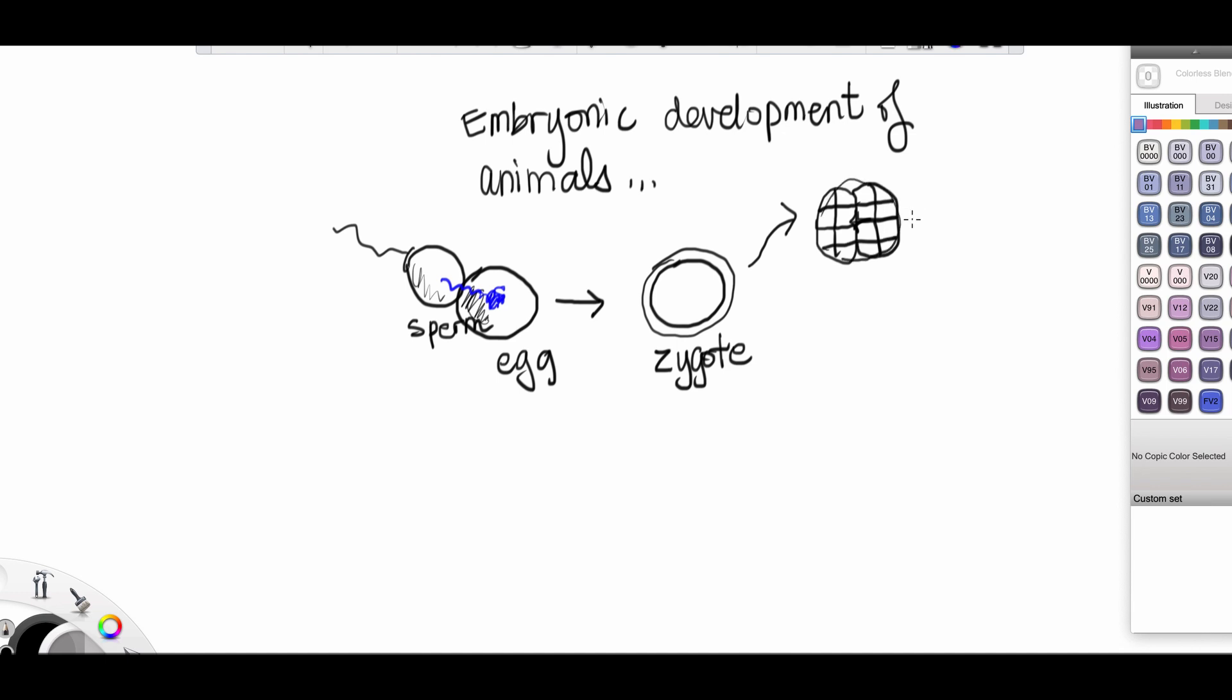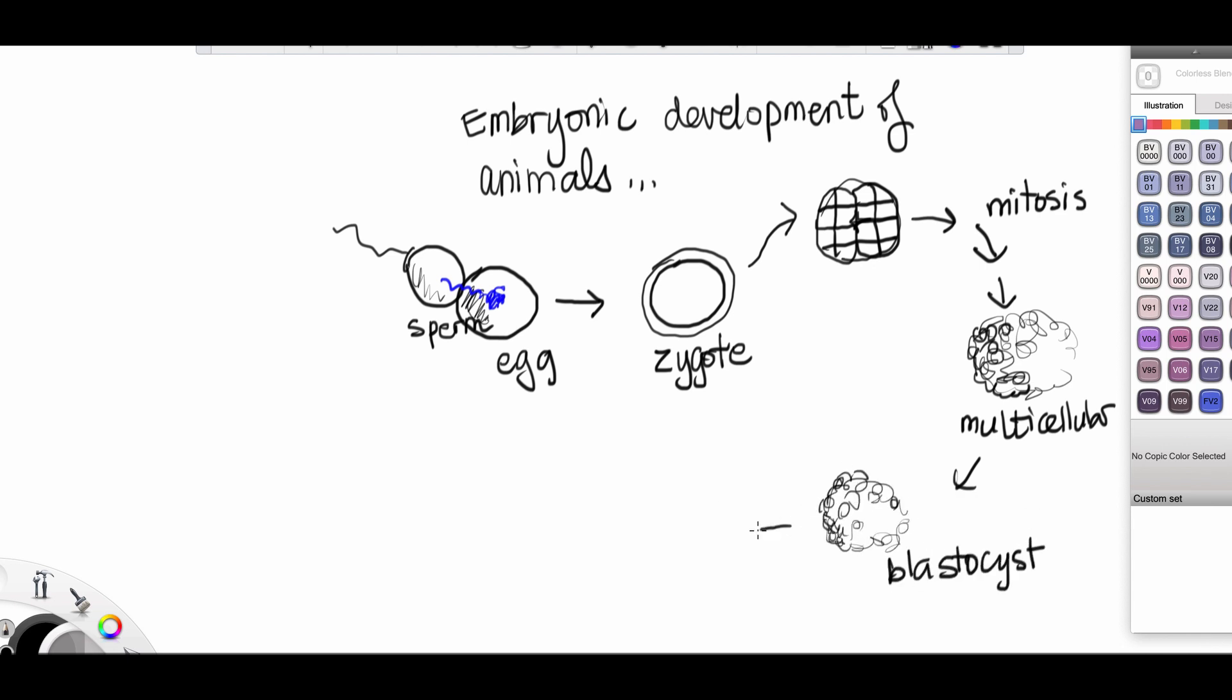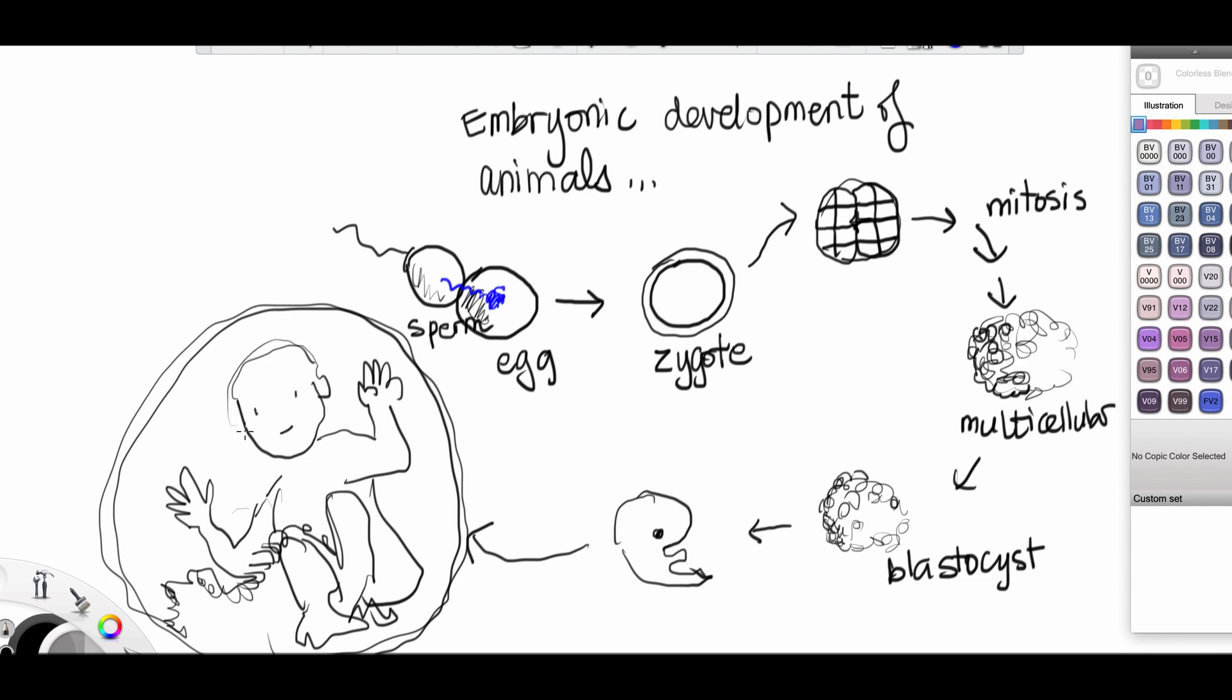and then mitotic division begins. When mitosis continues during cellular division, it creates a blastocyst, which eventually becomes an embryo, and then that turns into a fetus, at least in mammals such as yourself.